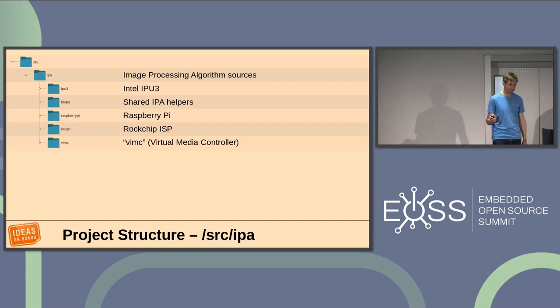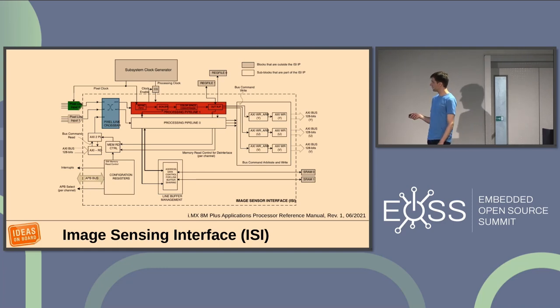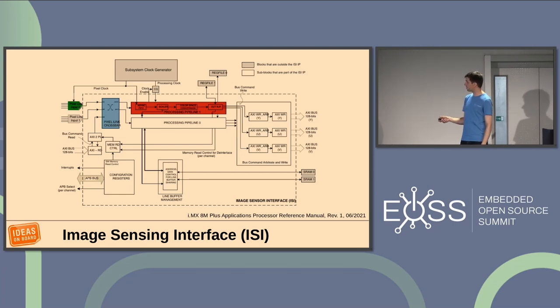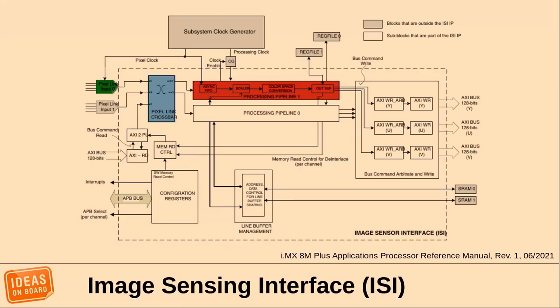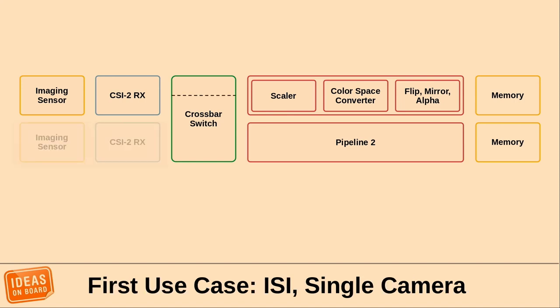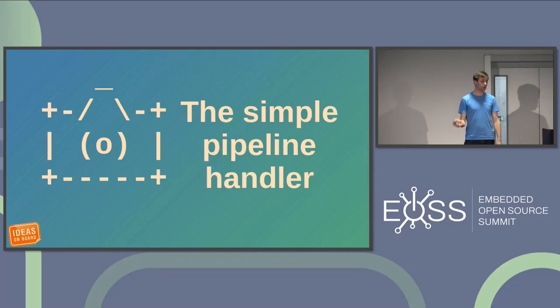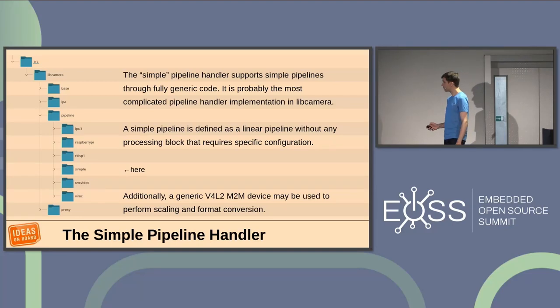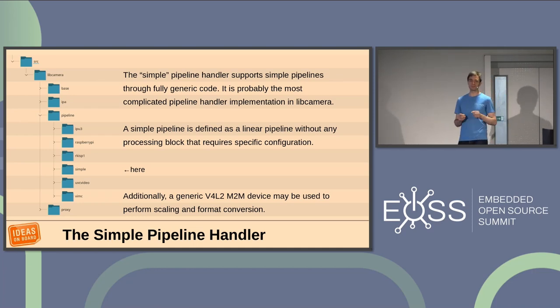Let's start simple. This is the block diagram of a camera pipeline on an NXP IMX8M Plus for a piece of hardware called the ISI — not an ISP, it's fairly simple. You have multiple inputs from different camera sensors, a crossbar switch at the front, and a very short processing pipeline with just a scaler and a color space converter. There are lots of platforms as simple as that.